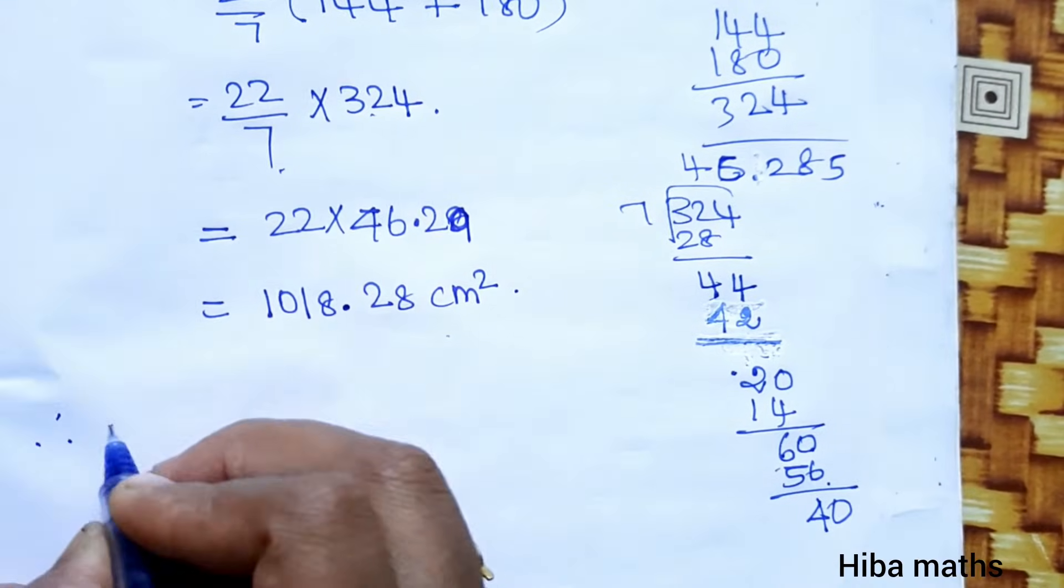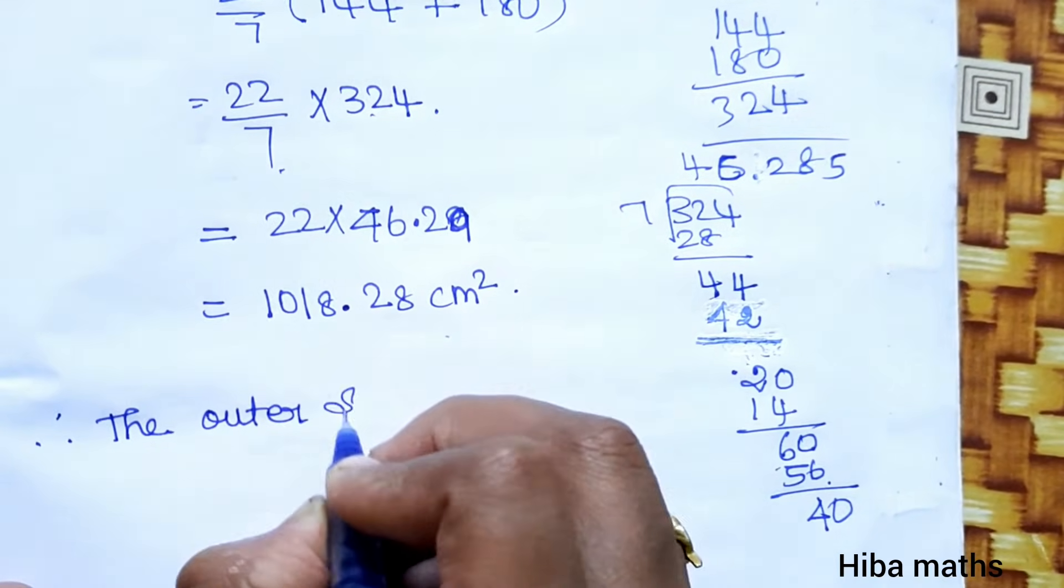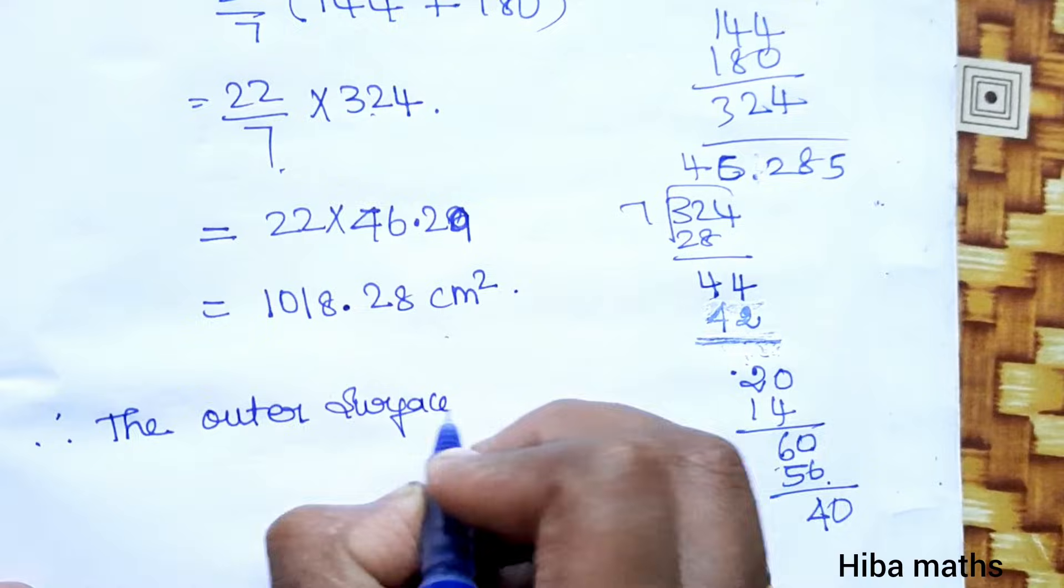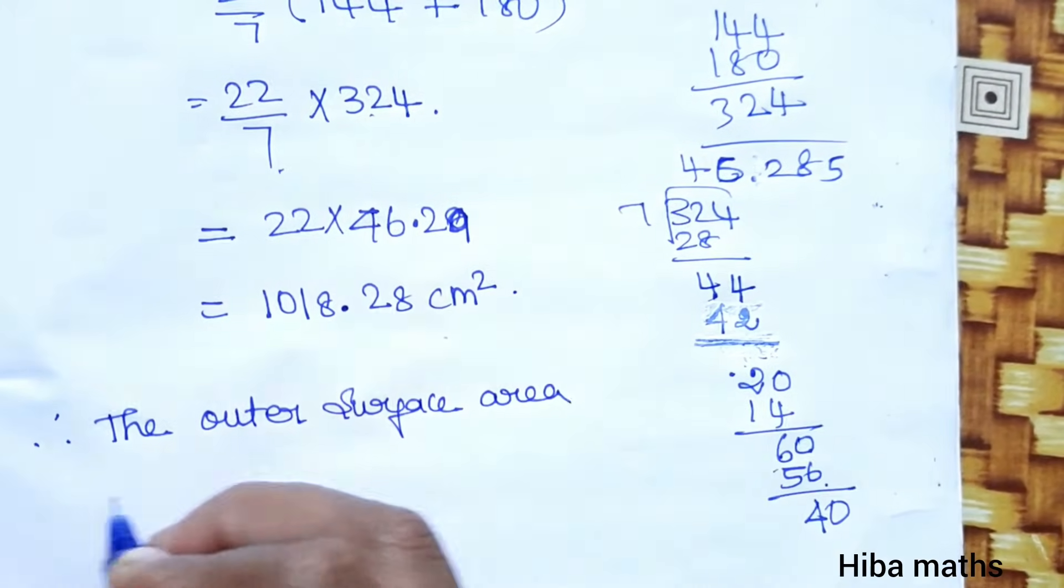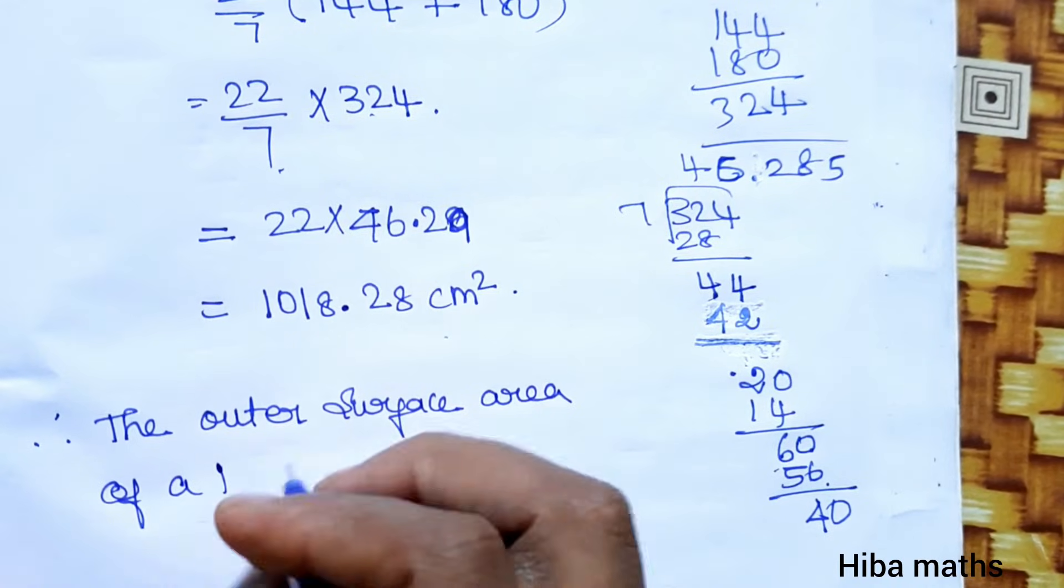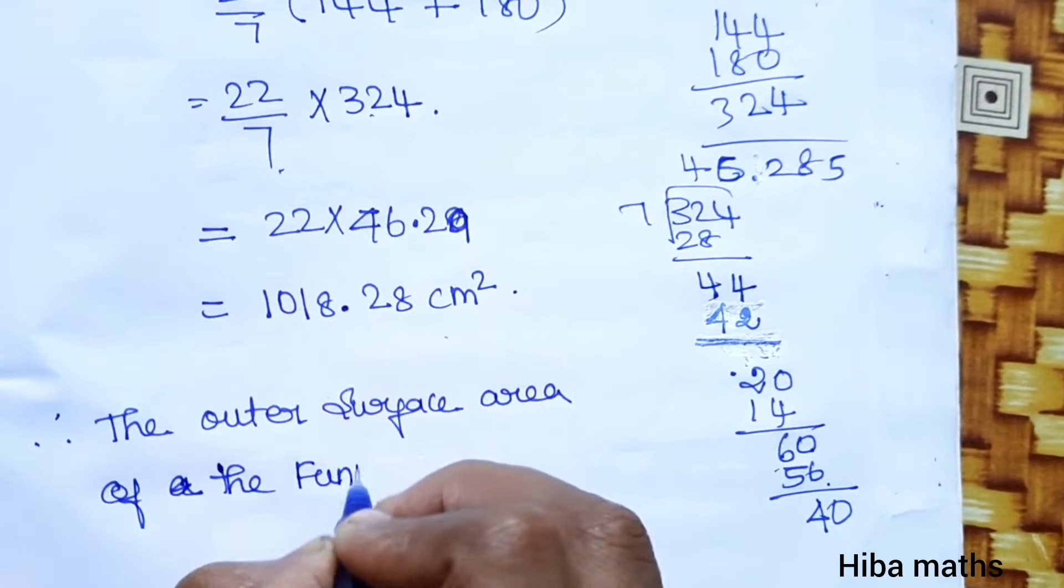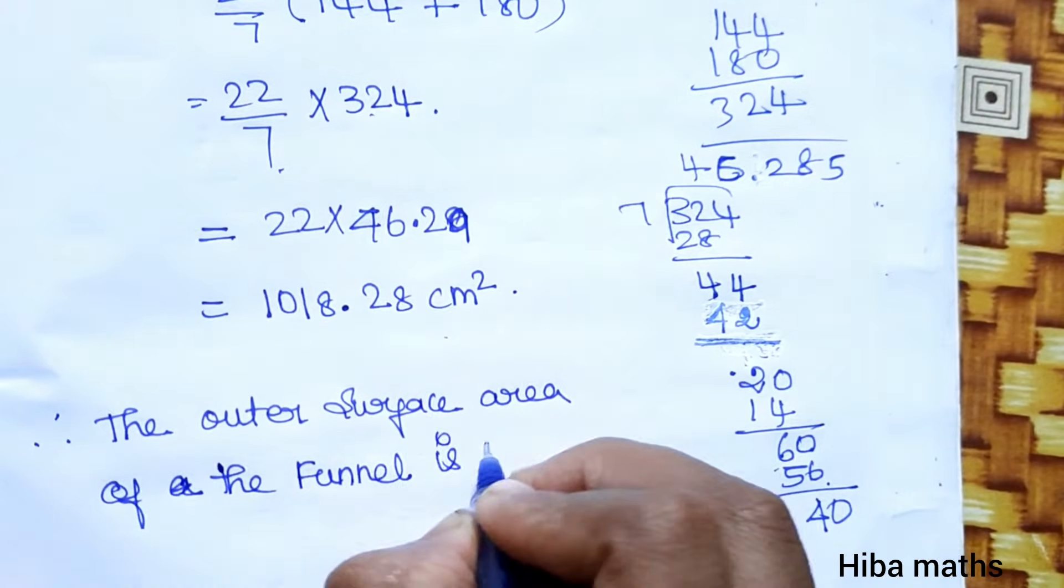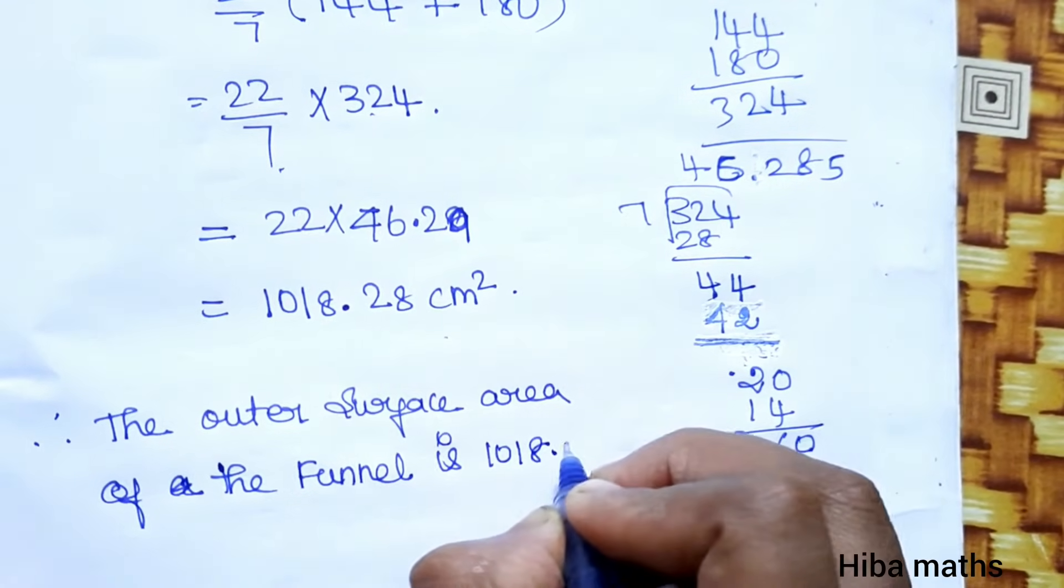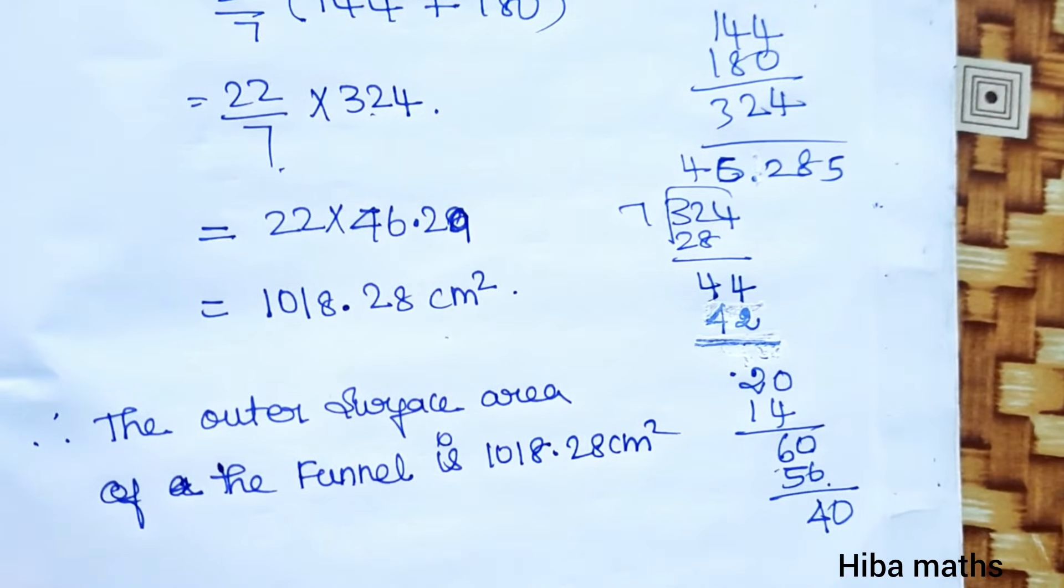Therefore, the outer surface area of the funnel is 1018.28 square centimeters. That's all. Thank you so much for watching.